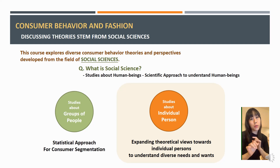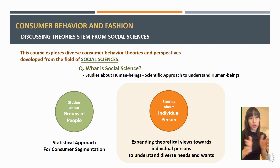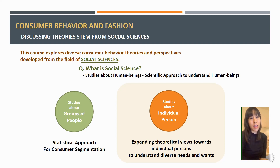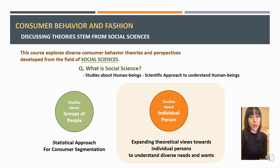Traditionally, social science research has studied groups of people, and those findings contributed to marketers' ability to segment consumers into certain groups. But nowadays, the field is expanding its view to talk about the individual person — to study individual characteristics of a person. We are taking this expanded theoretical view toward the individual to understand better their diverse needs, wants, and desires.